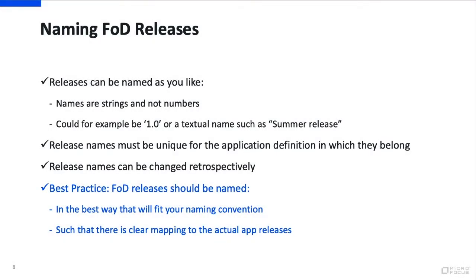When you name a release, release names are strings, not numbers. So a release name could be 1.0, 2.0, and so on, or could be some other string. Release names must be unique for the application definition they belong to. Application names must also be unique for your tenant. You can change release names and application names retrospectively. Best practice is to name them in a way that best fits your naming convention, with a clear mapping between the FOD release names and your actual release names.